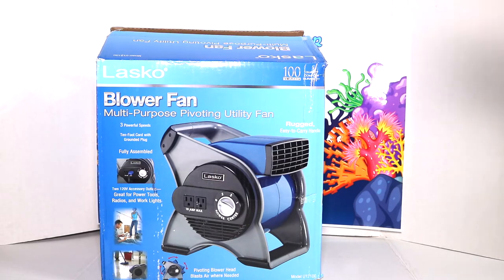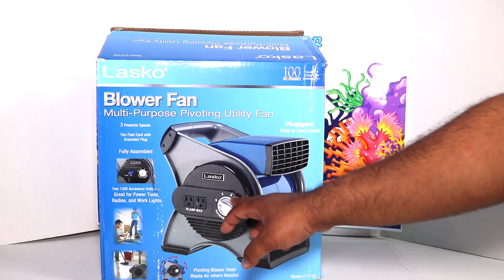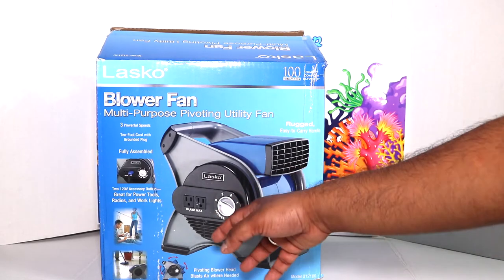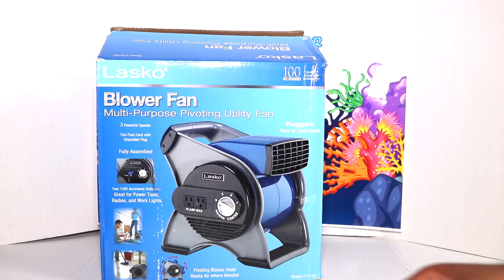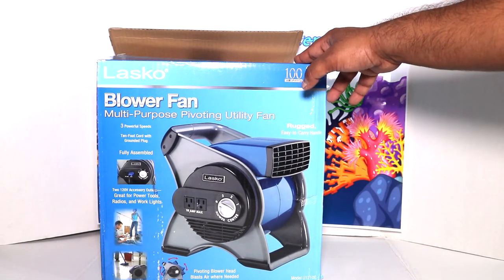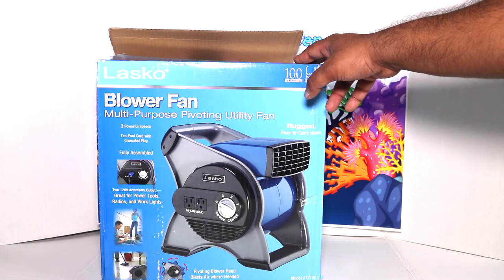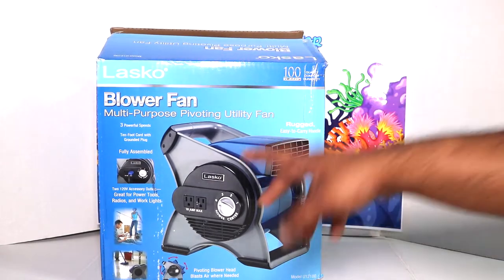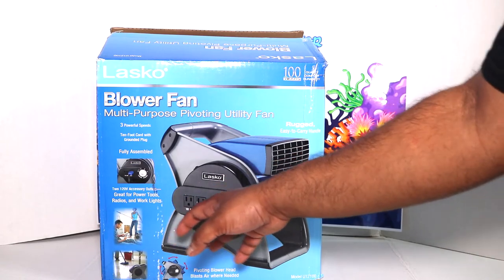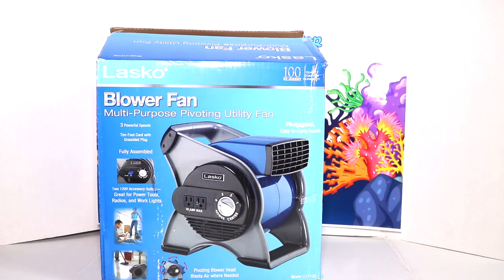Another good thing is it has three power options: level one is the weakest, three is the highest. You get a 10-foot cord grounded with a grounded plug, and you get two 10-amp (basically 5 amp each) outlet 120-volt accessory outlets.